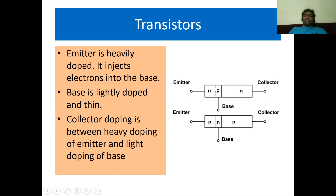The first PN junction exists between emitter and base — this is also called the emitter-base junction. The second PN junction exists between base and collector — this is called the base-collector junction.